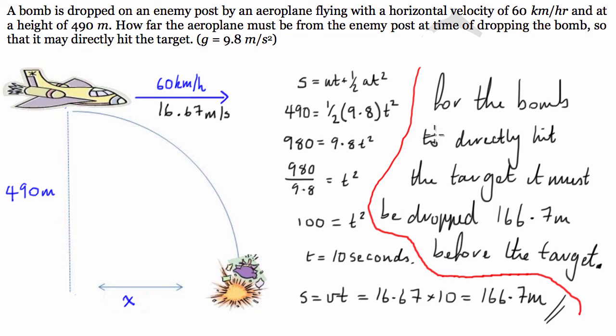and then we wrote down the interpretation of what we just found. So for the bomb to directly hit the target, it must be dropped 166.7 meters before the target. My English isn't that great in that explanation, but it will get the job done for full marks. So I hope this question helps. If it did, give it a thumbs up. Subscribe to my channel, guys. I put out new videos all the time. If you have any problems with anything you're doing at school, just send me a message and I'll be happy to help. I guess I'll see you next time.